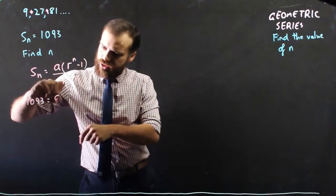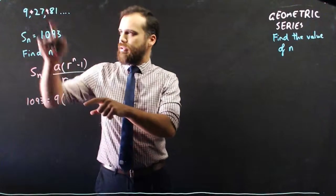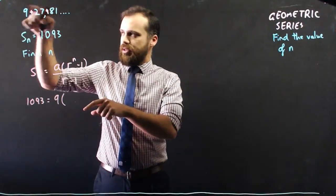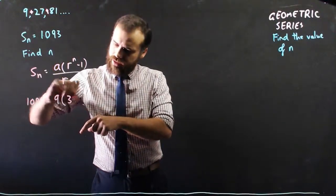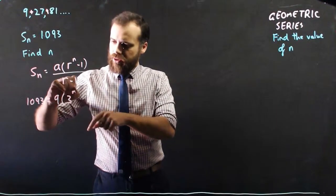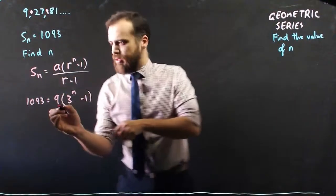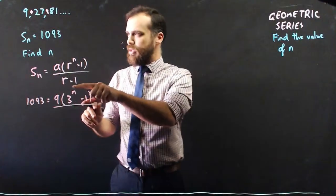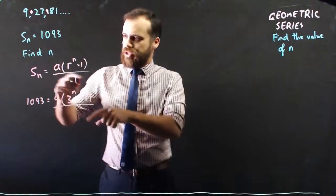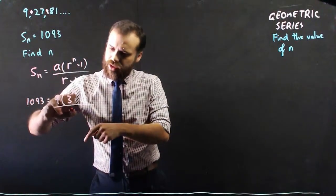a is the first term, which is 9. The common ratio, 27 divided by 9 is 3. 3 to the power of, we don't know what n is, over r minus 1, and the common ratio is 3. So 3 minus 1 is just 2.